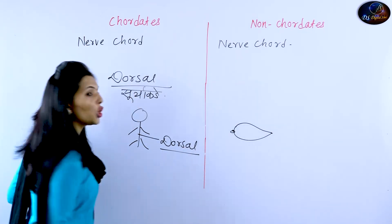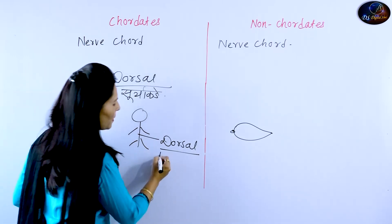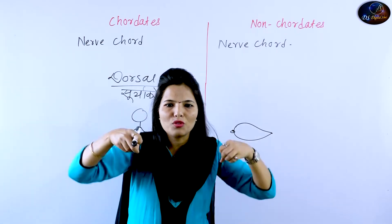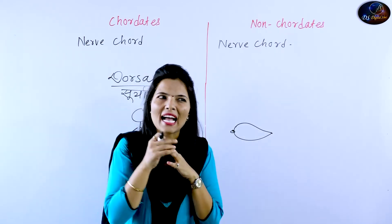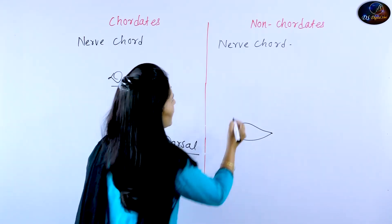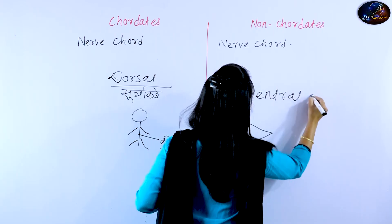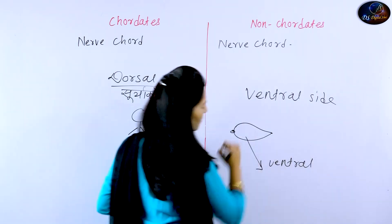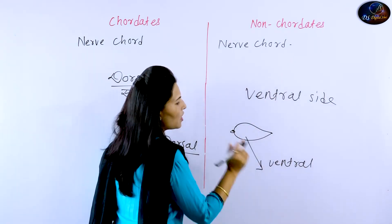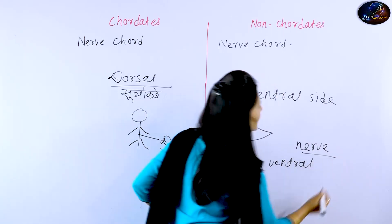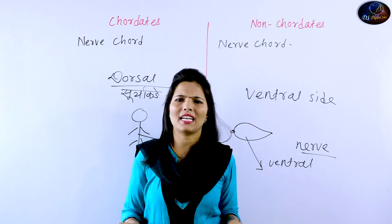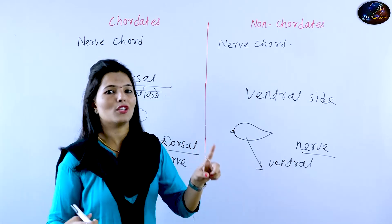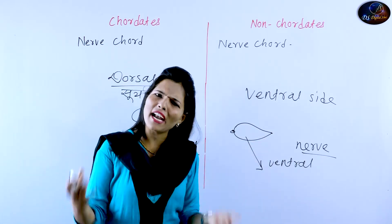Our nerve cord is present at the dorsal side. The nerve cord is present at the dorsal side. These medians are the nerves. The nerve cord is present — the coordinates have their nerve cord on the dorsal side, also called the vertebral side.